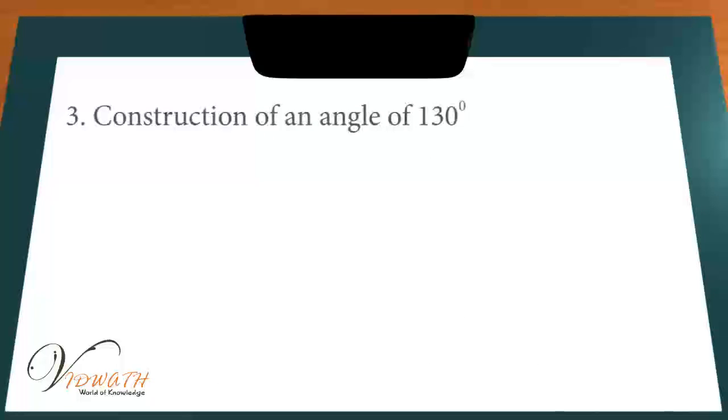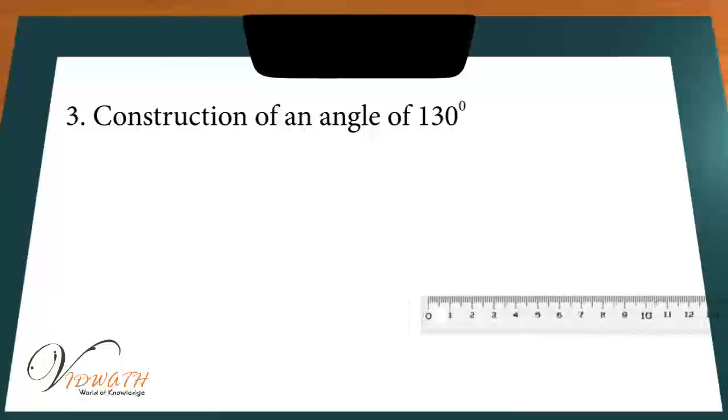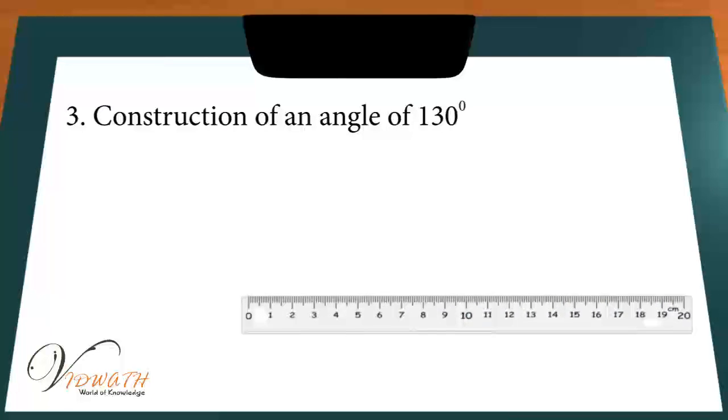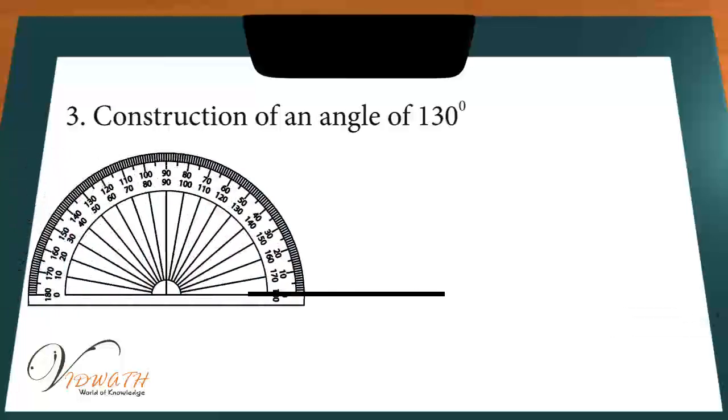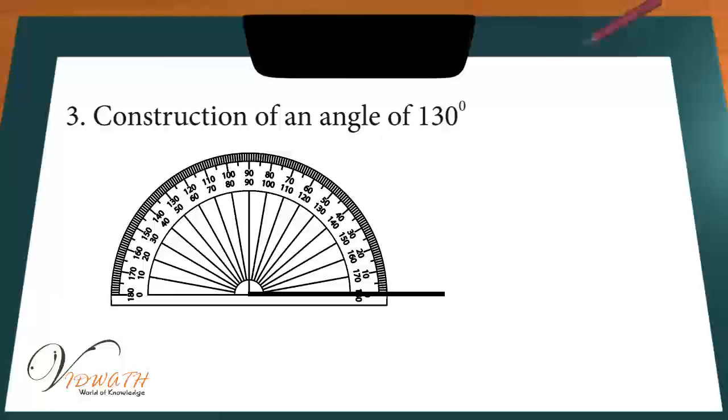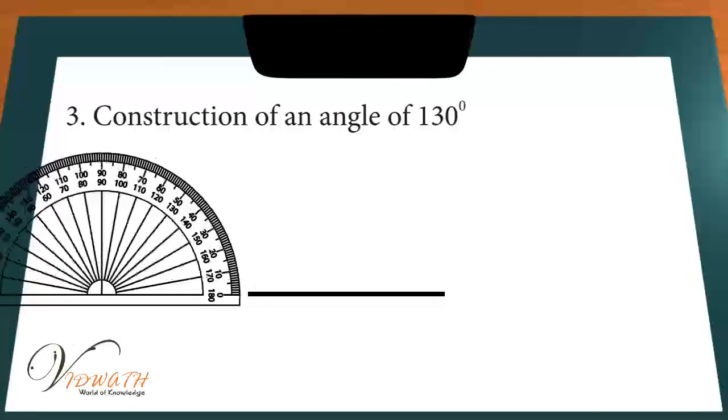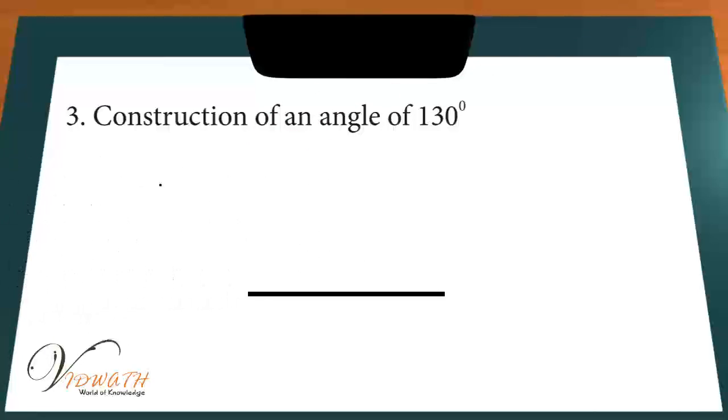Construction of an angle of 130 degrees. Steps of construction: Step 1, draw a line segment RS of any length. Step 2, start from 0 degrees of the protractor, move up to 130 degrees and mark a point T at 130 degrees. Step 3, remove the protractor